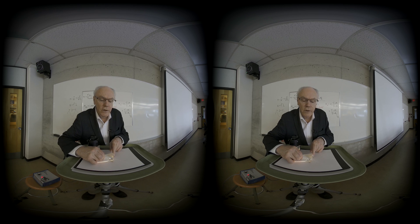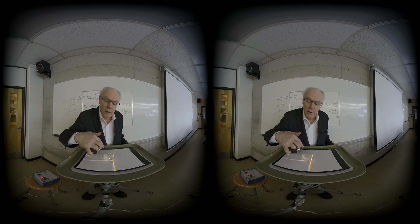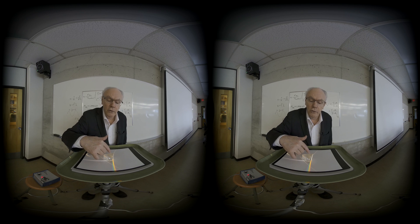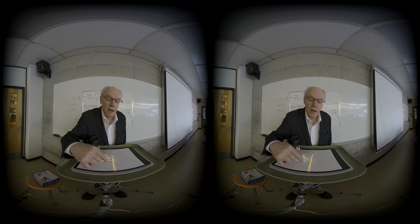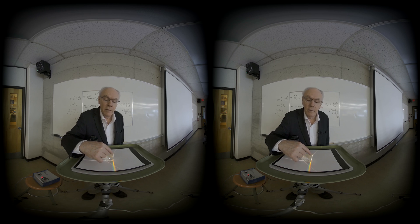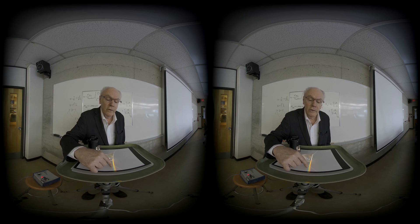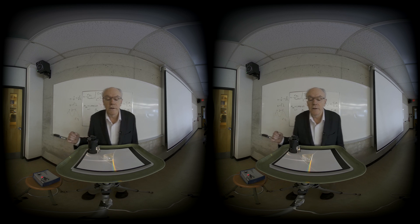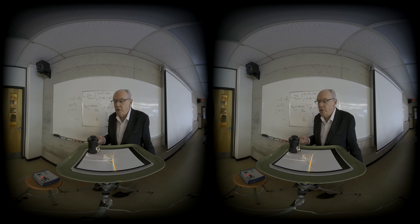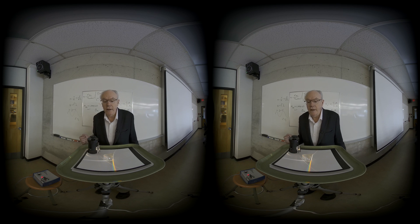If I angle the prism just right, you can see a spectrum of colors. Light enters the prism and is refracted on the first surface, then refracted again on the second surface and comes out. Because of the wavelength dependency of light in the medium, the colors spread out, with the greater frequency — the blue — coming out at a larger angle than the red. This is called dispersion of light in a material.